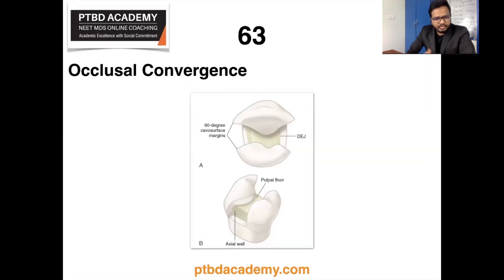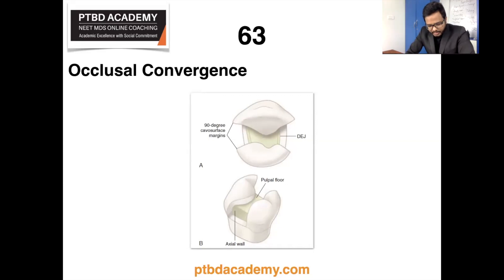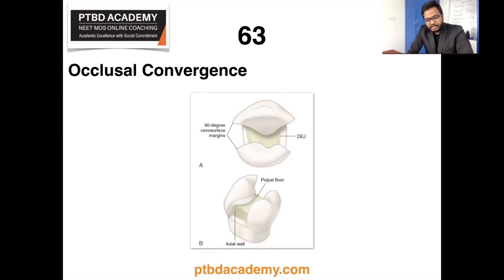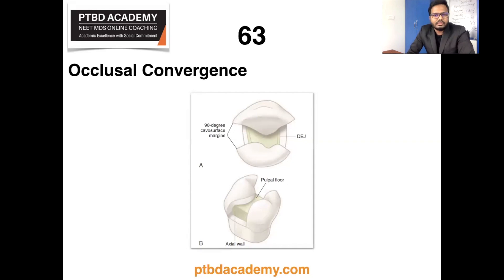The next question appears to be image-based, covering occlusal convergence, retention form, and proximal box. Occlusal convergence indicates a retention feature. Diagrams of class amalgam group preparations illustrate uniform pulpal and axial wall depth. The top illustration shows a 90-degree cavosurface margin, and below shows occlusal convergence of walls.